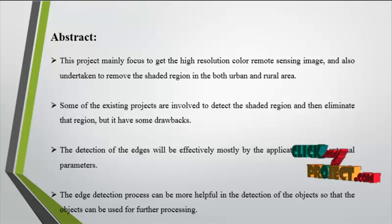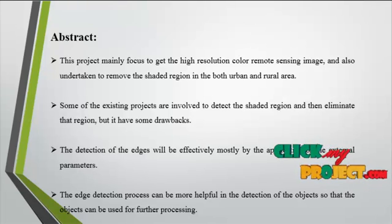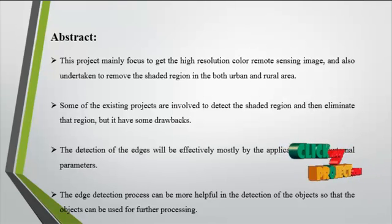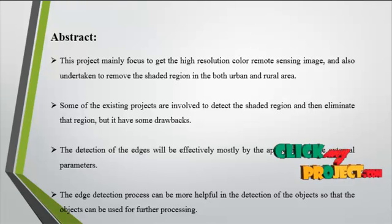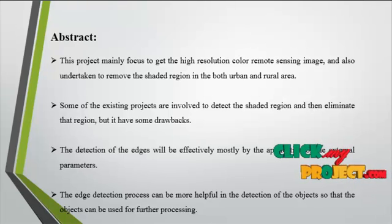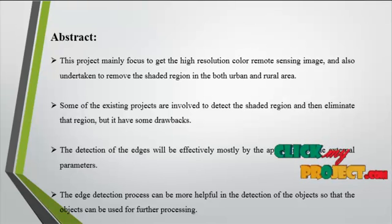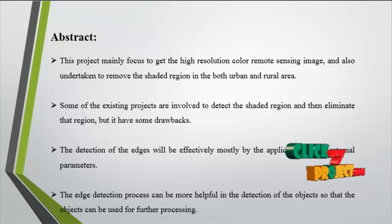Now we discuss the abstract. In accordance with the characteristics of Urban High Resolution Color Remote Sensing Images, we put forward an object-oriented shadow detection and removal method. In this method, shadow features are taken into consideration during the image segmentation, and then suspected shadows are extracted.